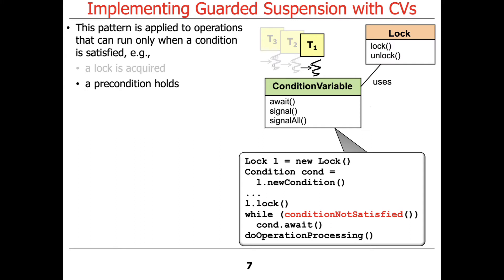The second thing that must occur, in addition to acquiring the lock, is: with the lock held, we check to see if the condition is satisfied. If the condition is not satisfied, we wait. If it is satisfied, we can continue on. The check is expressed as 'while condition not satisfied' — essentially 'while not condition satisfied' in Java-style. The precondition has to apply.